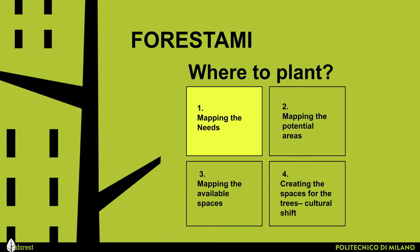The first is to understand which are the spaces that mostly need urban forestry. A second element is to understand if there is enough space to plant the trees. The third element requires consideration of the actual available space in terms of property available to plant. And at the same time, we need to create the space for the trees by considering that the people who will see the trees planted and growing will love and appreciate them.